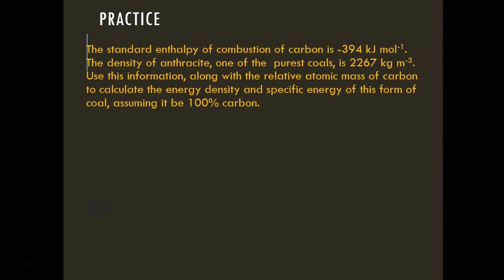The standard enthalpy of combustion of carbon is −394 kJ/mol. The density of anthracite is 2,267 kg/m³. Use this information along with the relative atomic mass of carbon to calculate the energy density and specific energy of this form of coal, assuming it to be 100% carbon.